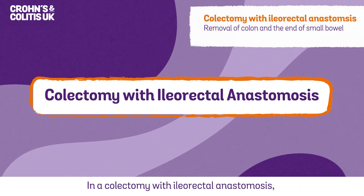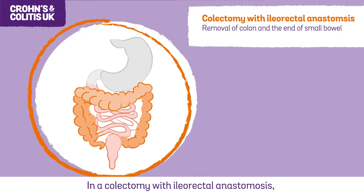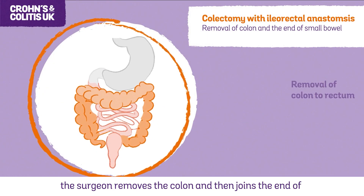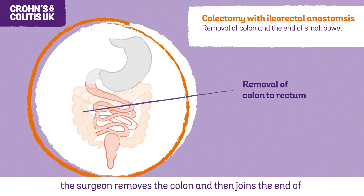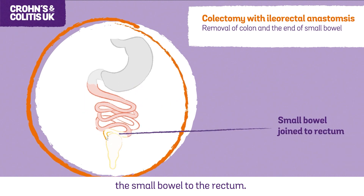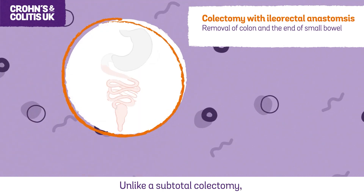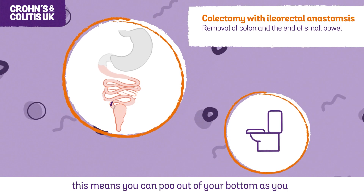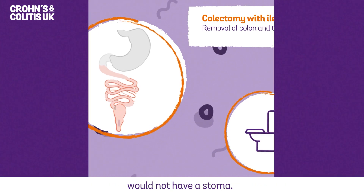In a colectomy with ileorectal anastomosis, the surgeon removes the colon and then joins the end of the small bowel to the rectum. Unlike a subtotal colectomy, this means you can poo out of your bottom as you would not have a stoma.